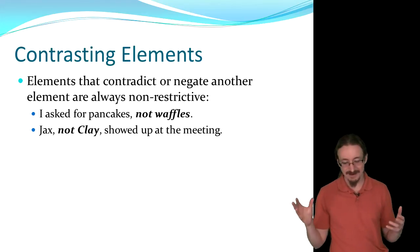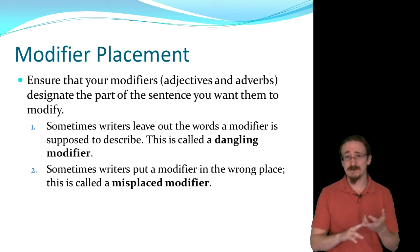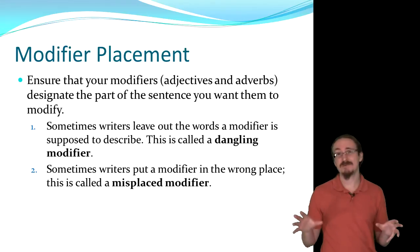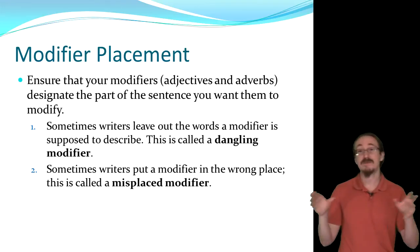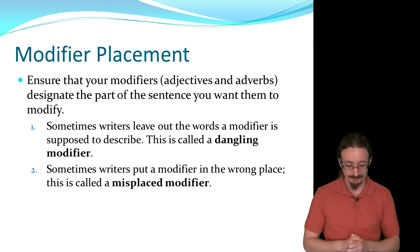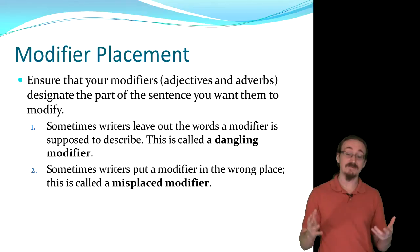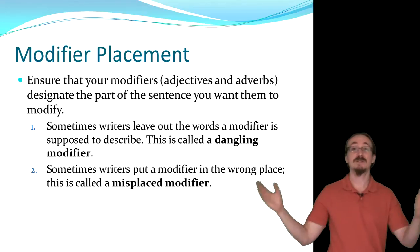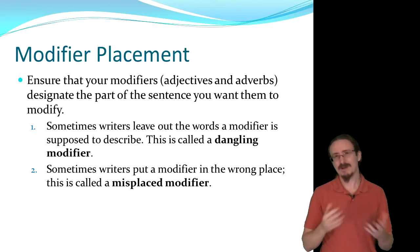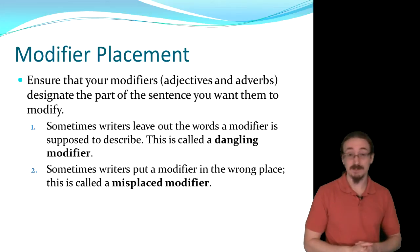Now we get into modifier placement. We've been talking about all kinds of modifiers — adjectives, adverbs — they can be clauses or phrases. The important thing is that when you set up your sentence, you want those modifiers clearly lined up with what they should modify. There are two different errors related to this: one is the dangling modifier, where you didn't include what the modifier is supposed to be modifying. More common is the misplaced modifier, where you have it in the sentence somewhere, but it's not in the right place.